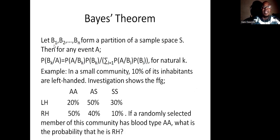This theorem: Let B_i's form a partition of a sample space S. Then for any event A, probability of B_k given A is equal to probability of A given B_k times probability of B_k over summation of probability of A given B_i times probability of B_i. And here is an example to buttress that.